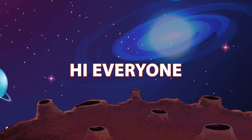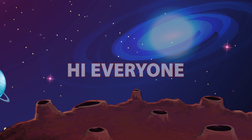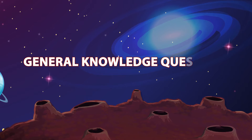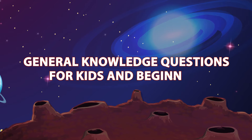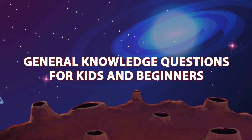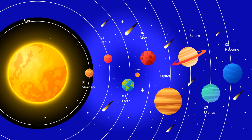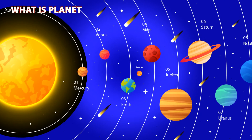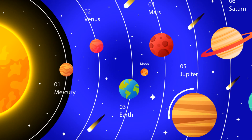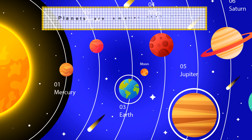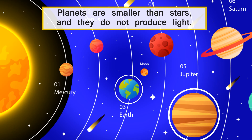Hi everyone! In today's video we are going to learn some science knowledge questions for kids and beginners. First of all we will learn about planets and the solar system. What is a planet? A planet is a large object such as Jupiter or Earth that orbits a star. Planets are smaller than stars and they do not produce light.